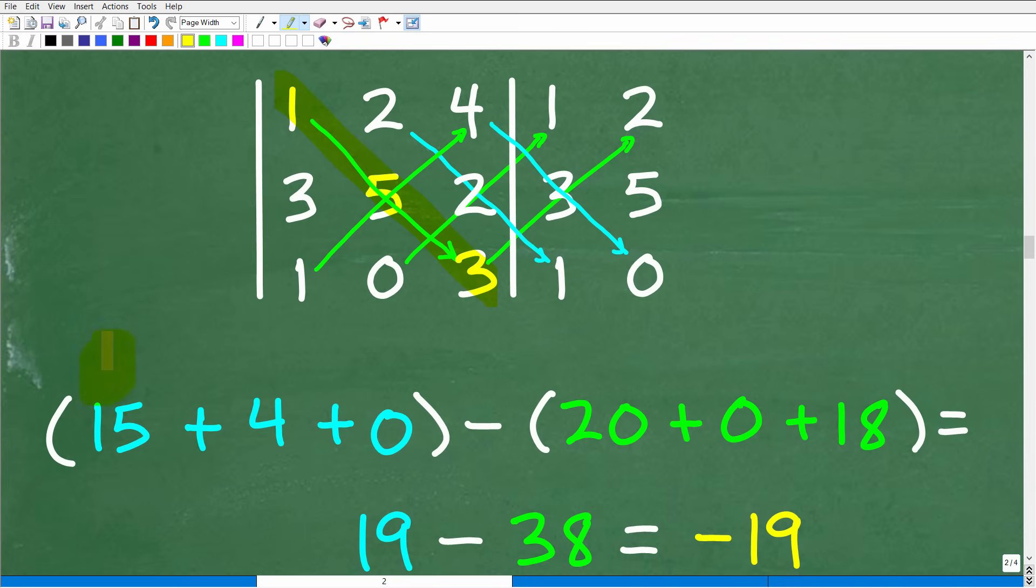Then we're going to go right here - two times two times one. We're specifically going from this direction. First, you're going to go all these diagonals and find the product. One times five times three is 15, two times two times one is four, four times three times zero is zero. Not this way, definitely going downhill from left to right. That's the first thing you do.